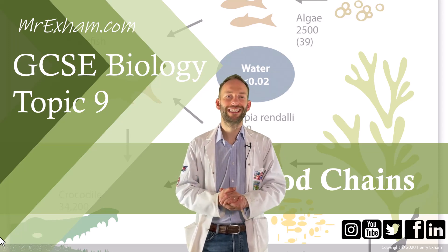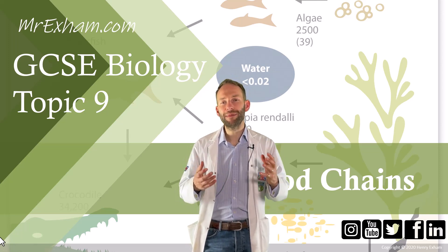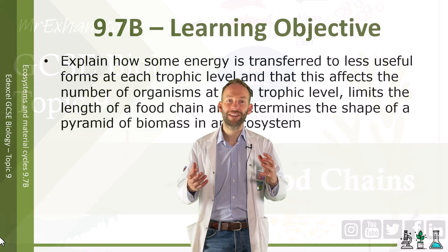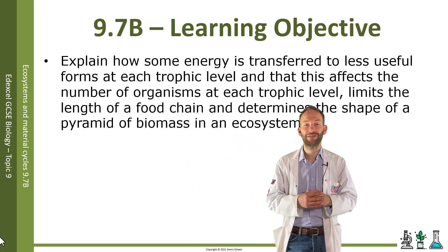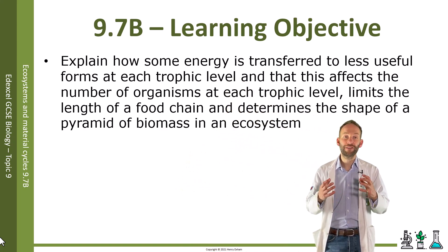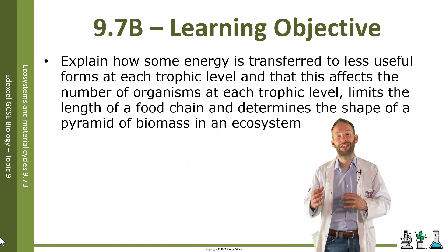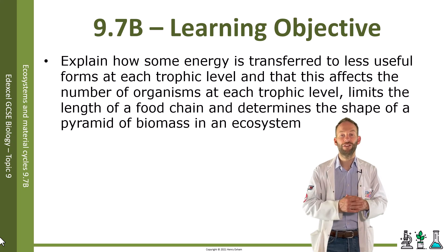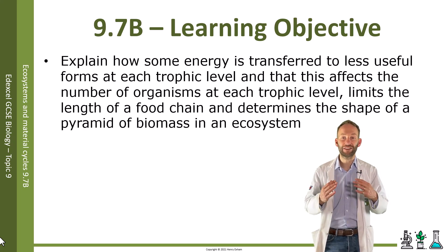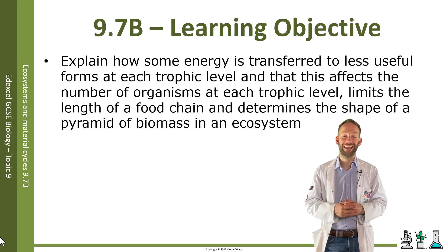Objective 9.7b: explain how some energy is transferred to less useful forms at each trophic level, and that this affects the number of organisms at each trophic level, limits the length of a food chain, and determines the shape of a pyramid of biomass in an ecosystem.